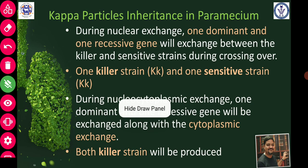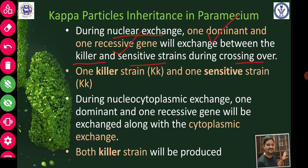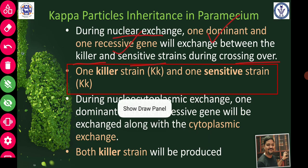During conjugation — the process by which Paramecium exchanges genetic material — there will be nuclear exchange. One dominant gene from the killer strain will go to the sensitive strain, and one recessive gene from the sensitive strain will go to the killer strain, making both heterozygotes (Kk). This is nuclear exchange only. As a result, one killer strain and one sensitive strain will be the product, because kappa particles were not transferred.